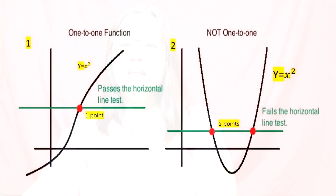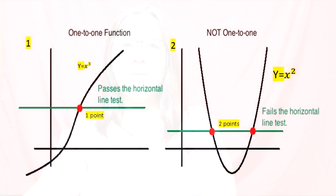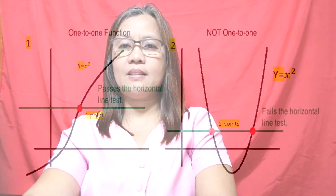We have two graphs here. For graph number one, the horizontal line intersects the graph at one point. So therefore it passes the horizontal line test. In graph number two, the horizontal line intersects the graph at two points. So therefore it fails the horizontal line test.